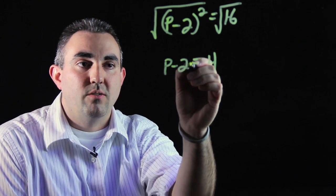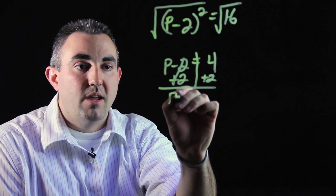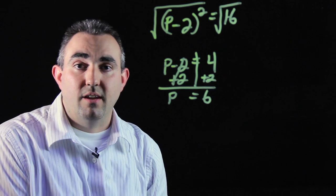Now we can solve the rest of the problem by using inverse operations. Add 2 on both sides and p equals 6 in this case.